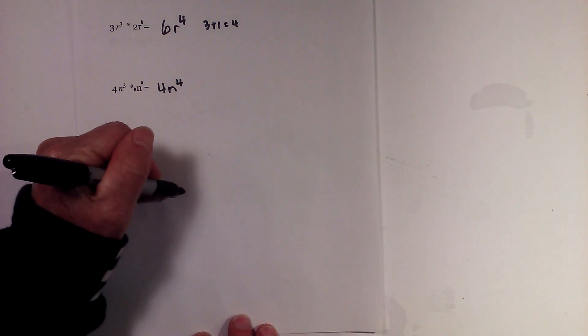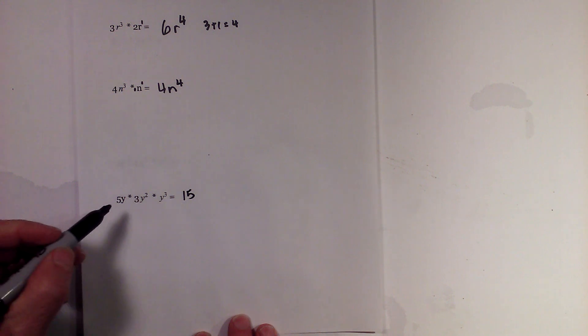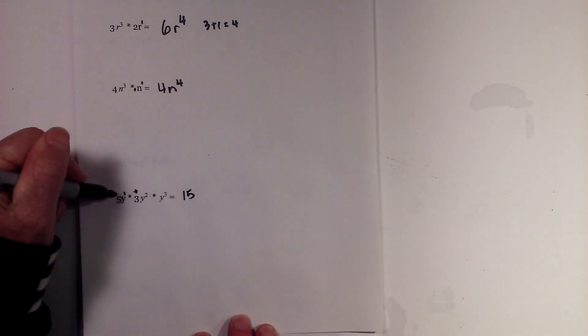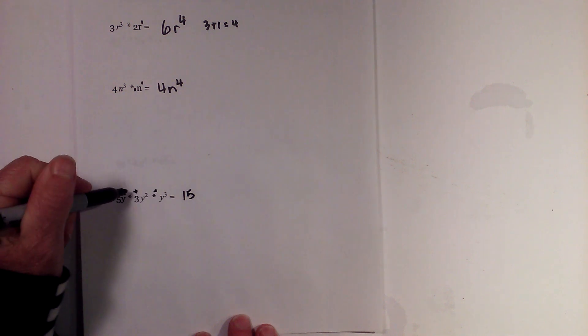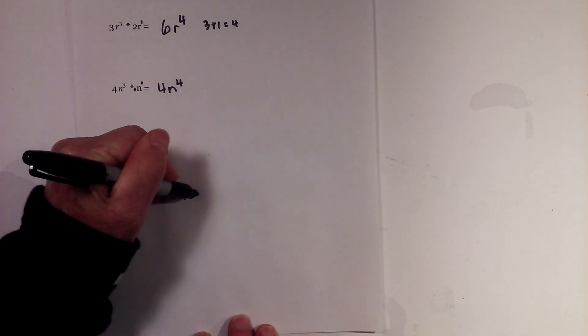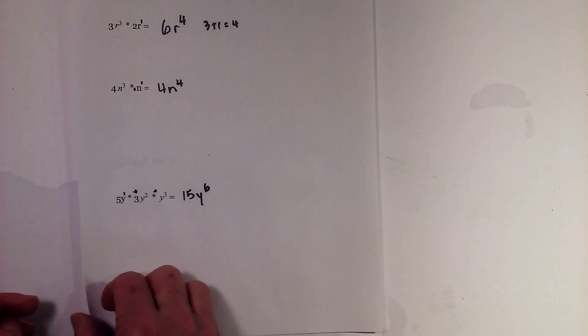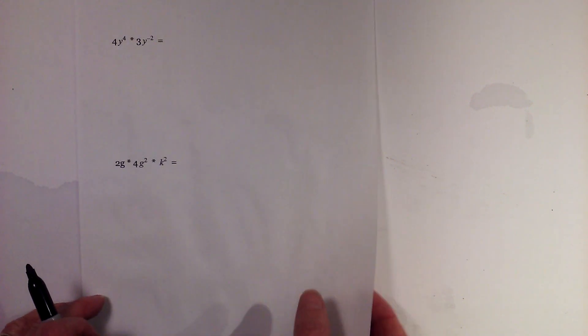How about this one? Five times three is fifteen. Now we have a one here so it'll be one plus two plus three, so that becomes y to the sixth. So it's fifteen y to the sixth.